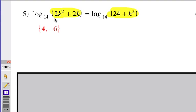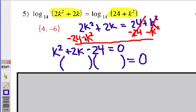As always, let's make sure the bases are the same. Yes, log base 14 there and log base 14 there. That means that these two expressions are equal to each other, so there is our equation. 2K squared plus 2K equals 24 plus K squared. Now let's get everything over on one side, set it equal to 0. We should get K squared plus 2K minus 24 equals 0.